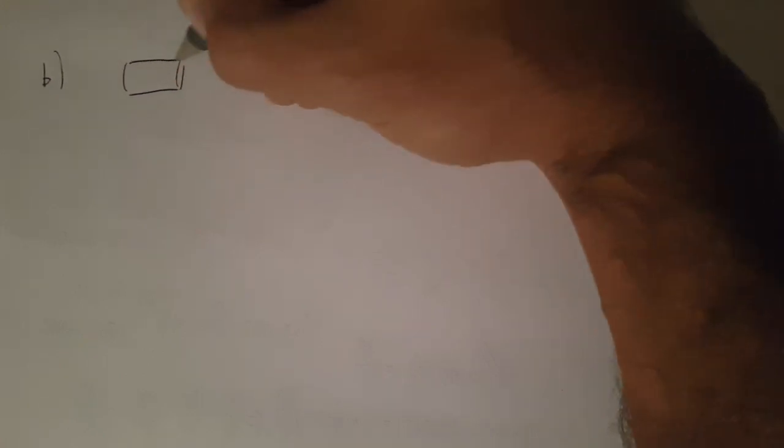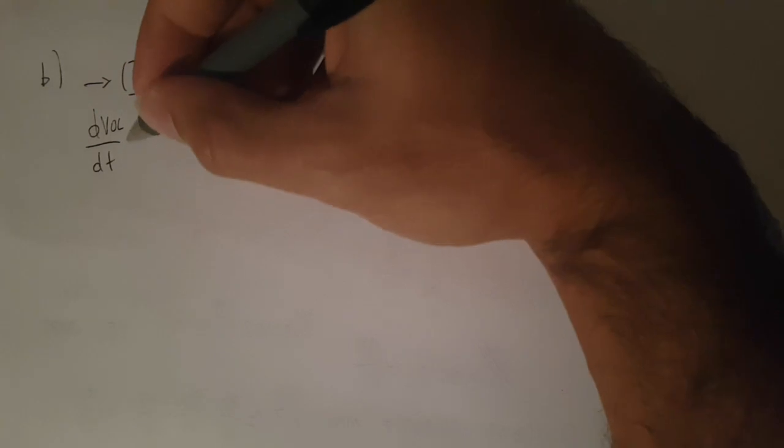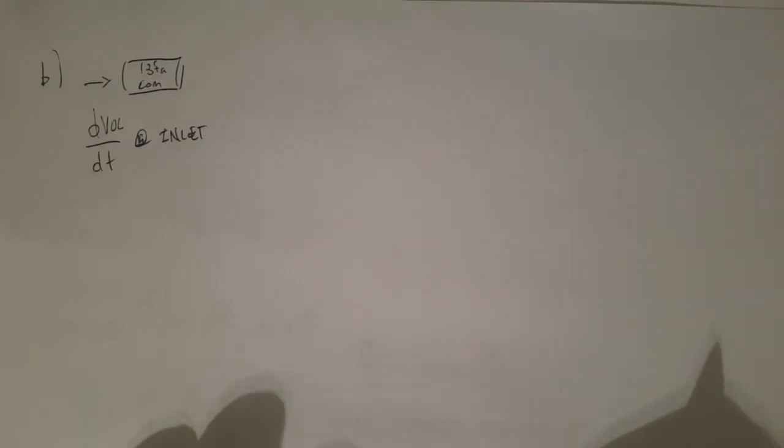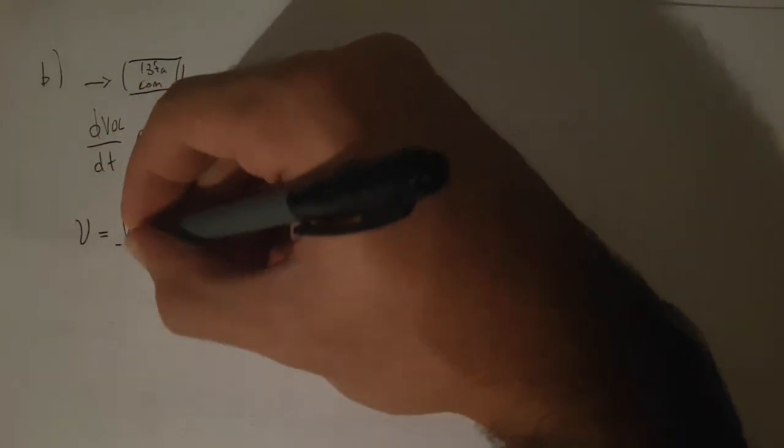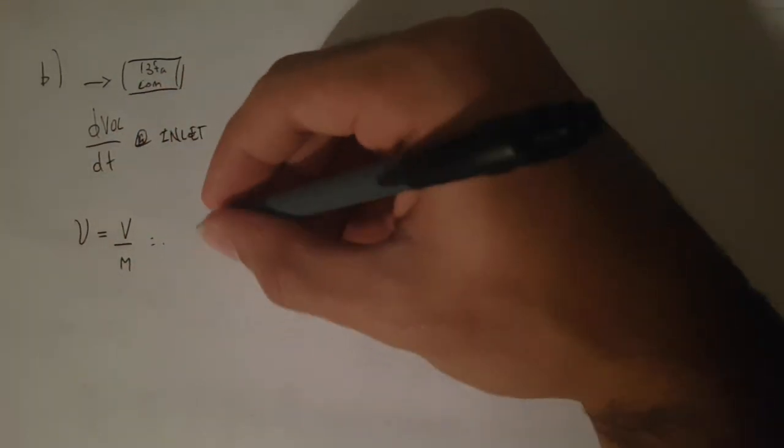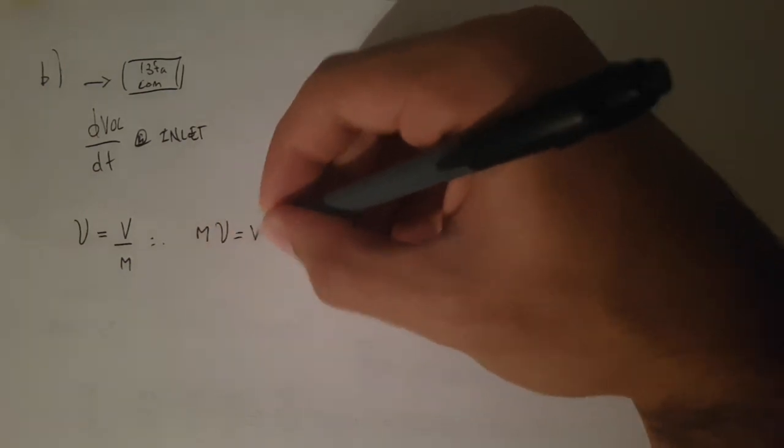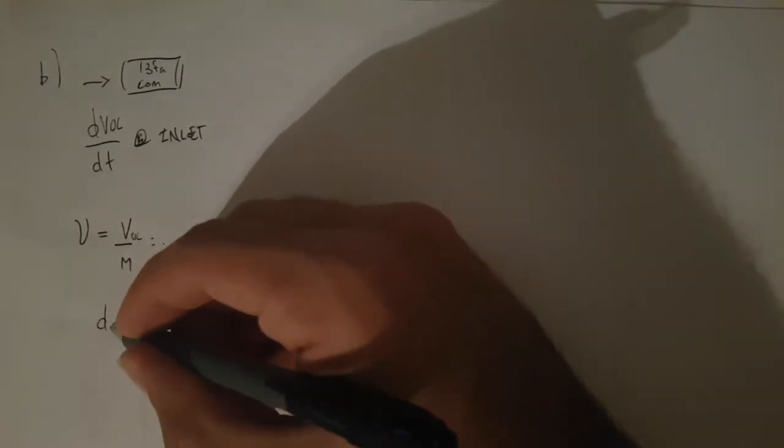Part B asks for the volume flow rate of the compressor at the inlet, so dV/dt at inlet. As usual, we know the specific volume - by looking at the units, it's volume divided by mass. Therefore, if we have mass times specific volume, we have volume. If we take the derivative with respect to time on both sides...